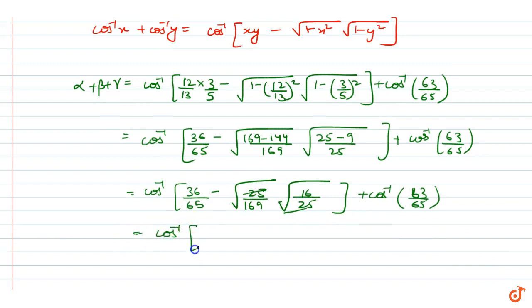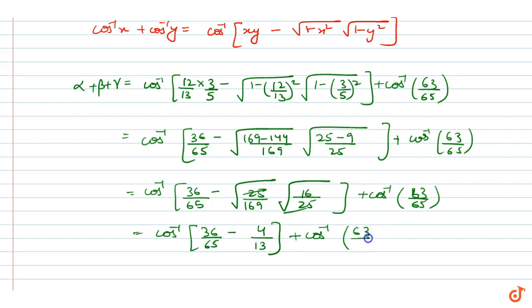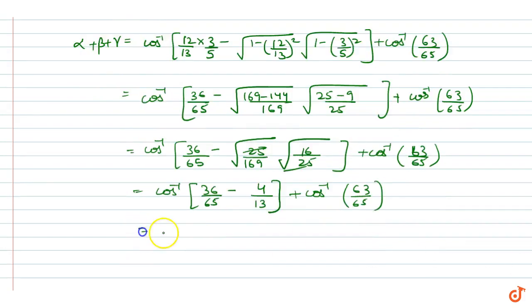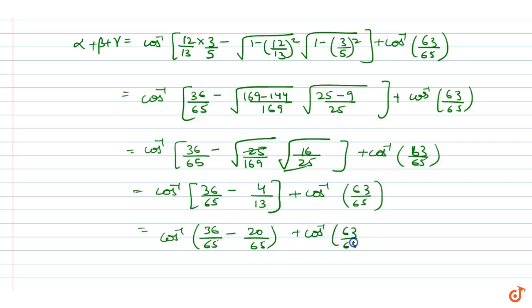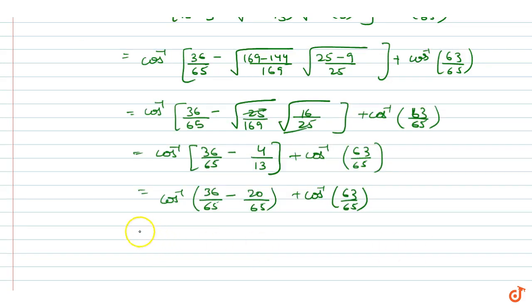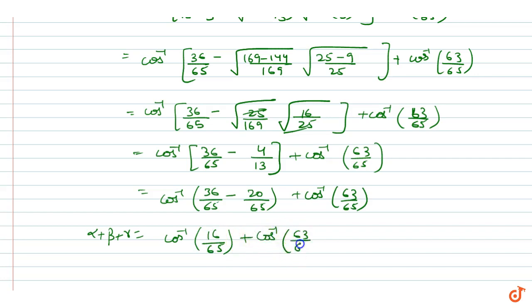Simplifying: cos⁻¹(36/65 − (5/13)·(4/5)) + cos⁻¹(63/65) = cos⁻¹(36/65 − 20/65) + cos⁻¹(63/65) = cos⁻¹(16/65) + cos⁻¹(63/65). So α + β + γ = cos⁻¹(16/65) + cos⁻¹(63/65).